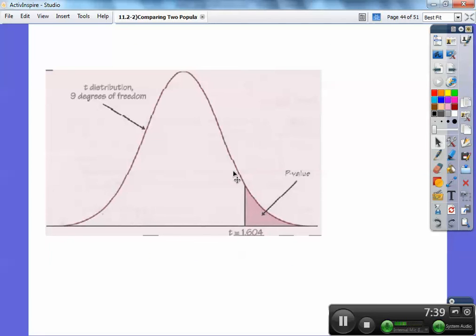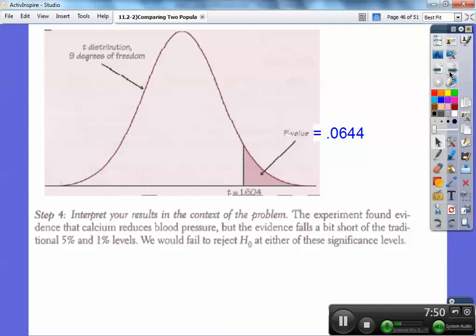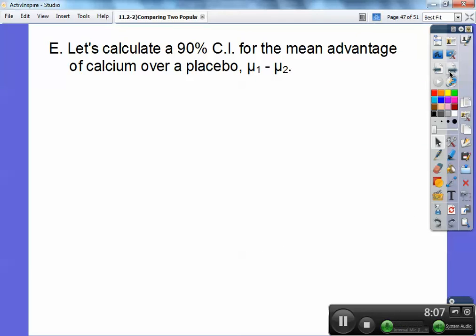So go ahead and draw that, you guys. This will show your AP readers you know what you're talking about right there. And your P value is that 0.0644 right there. And then step four, interpret your results. The experiment found evidence that calcium did reduce blood pressure, but the evidence falls a bit short for the traditional 5% and 1% levels. So we're going to fail to reject H₀ at either of these significant levels.